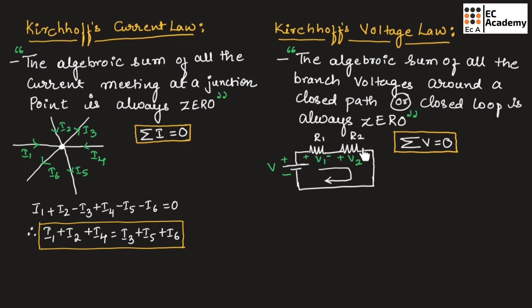If we consider this as an example, the algebraic sum of all the branch voltages around a closed loop or a closed path will always be equal to 0. In this example, we have connected two resistors in series with a voltage source. The voltage across resistor R1 is V1 and the voltage across resistor R2 is V2. Therefore, we can write: V − V1 − V2 = 0.